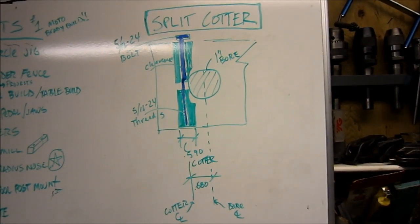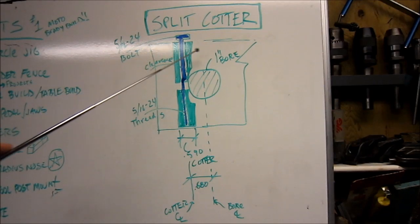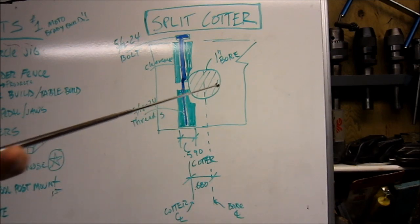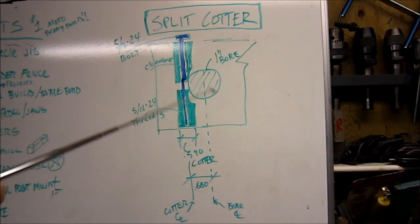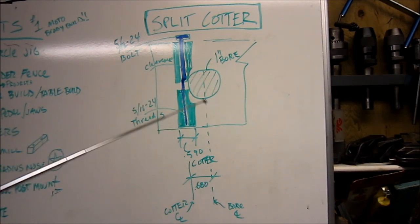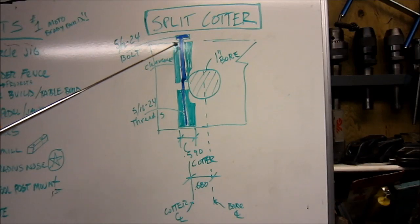Now, you're going to have to pardon my drawing ability, but the subject is split cotter. If you can imagine, we've got a block, and there's going to be a one inch bore in the block. In that bore, there's going to be a shaft that's going to go through that bore, and you want to lock the shaft in the bore. Well, this is the cotter, and this is a split cotter since it's split in two.